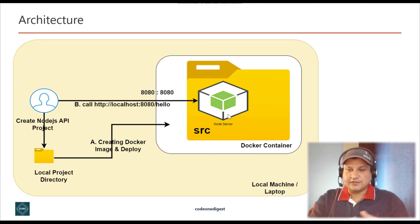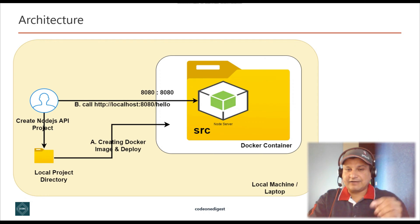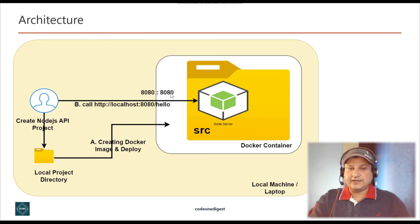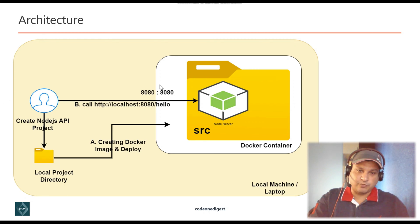The Docker image consists of the Node server and all the dependencies required to run. The source folder will also have a package.json, our source code, and everything else — we'll be transferring all the files into the source directory and running our application inside the Docker container on a Node server. We'll also be mapping the container port 8080 to our local host port 8080, so that we can access the Node application running inside the container from our local machine.